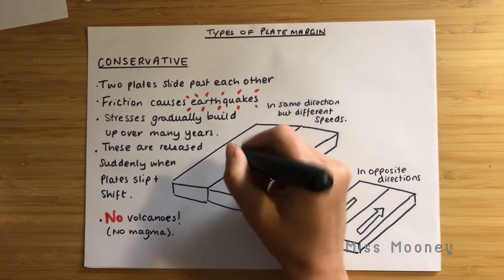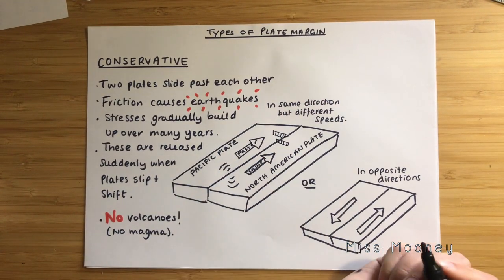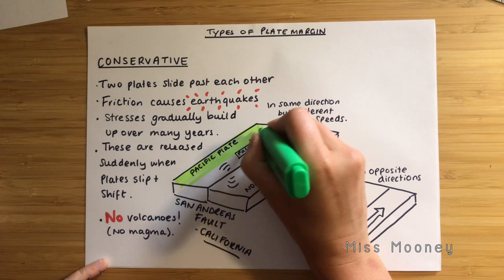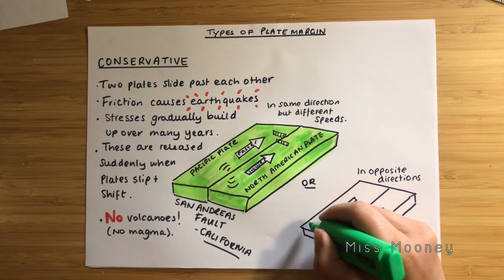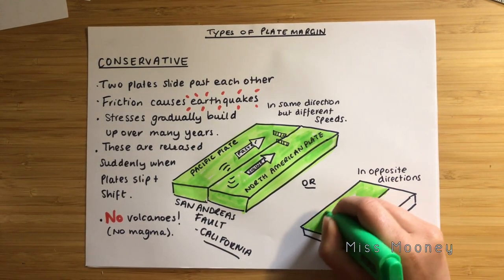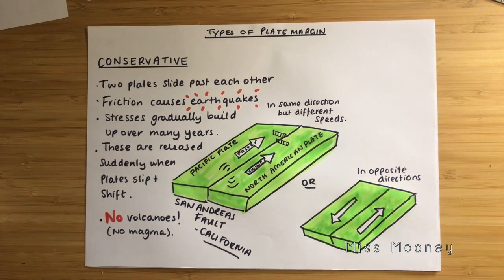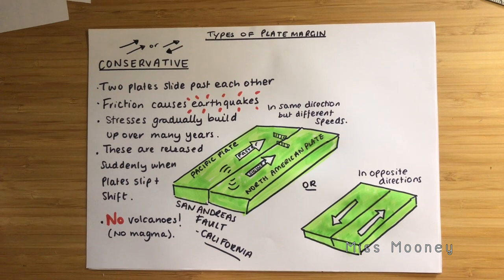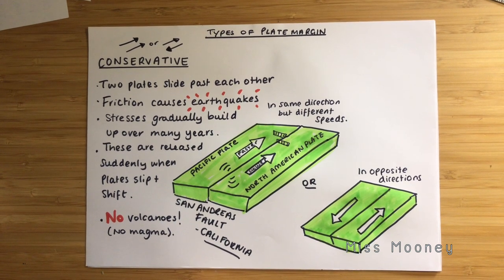There are no mountains or volcanoes at conservative plate boundaries because there is no magma escaping and creating new land. A great example is the San Andreas Fault in California, USA, where the Pacific plate is moving northwest at a faster rate than the North American plate. You may have seen the film San Andreas — it might be a good way to remember this plate margin, however it is horrendously inaccurate in terms of geography. To summarise: conservative margins are when plates slide past each other or go in the same direction at different speeds. We get earthquakes due to friction and the build-up and release of energy, and there are no volcanoes or new land created because no magma is released.